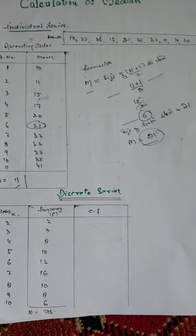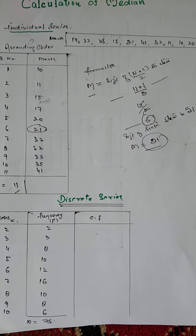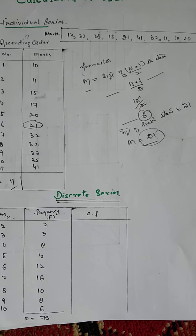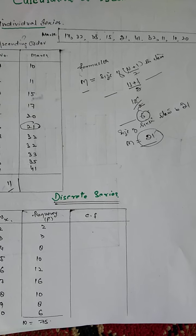Now if we do descending order also, it will make no difference in the median. Median will again be same, that's 21. This is how we calculate median for an individual series. Now let's move to discrete series.